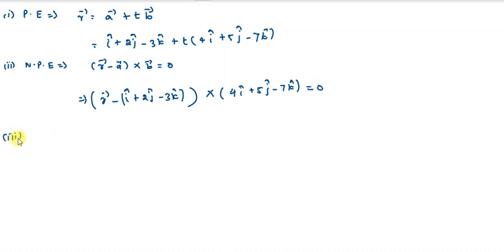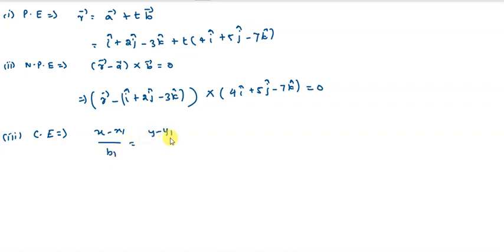For the third part, the Cartesian equation. The formula is: (x - x₁)/b₁ = (y - y₁)/b₂ = (z - z₁)/b₃.